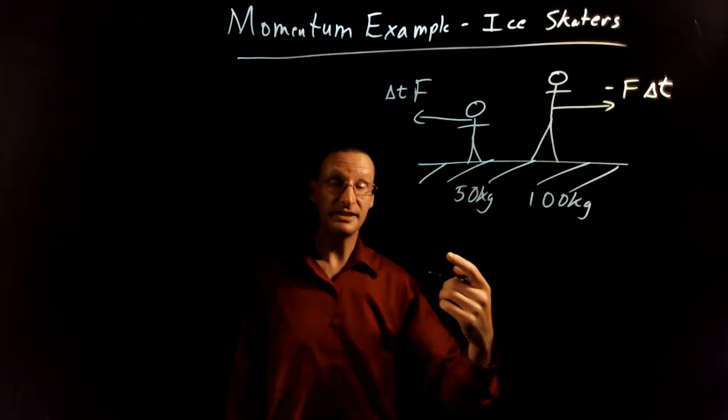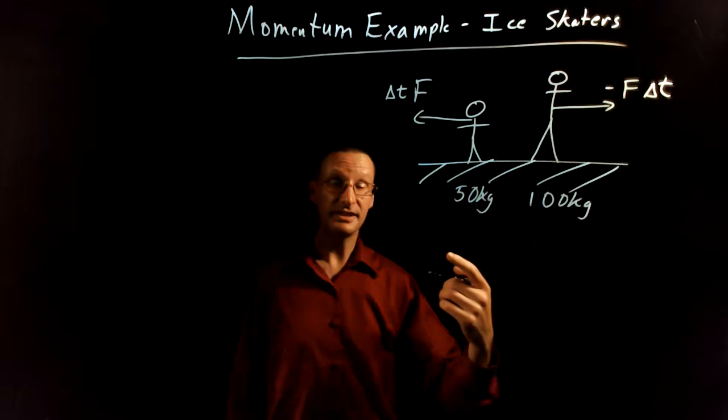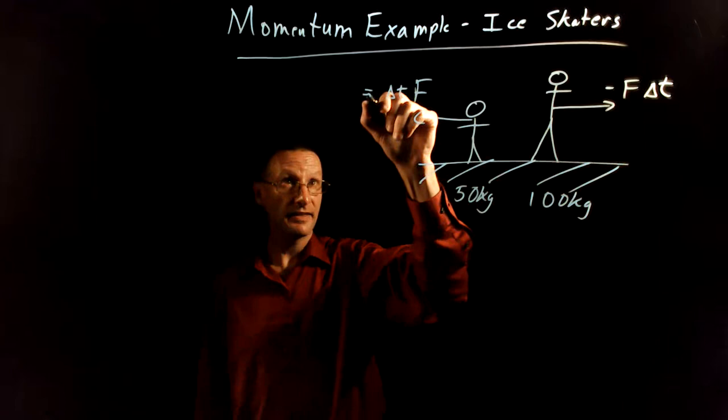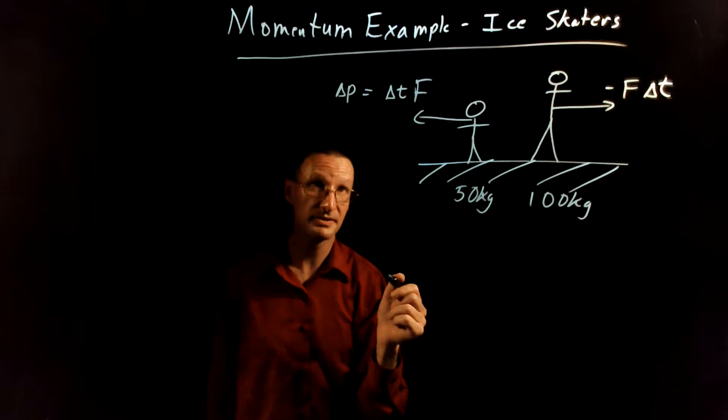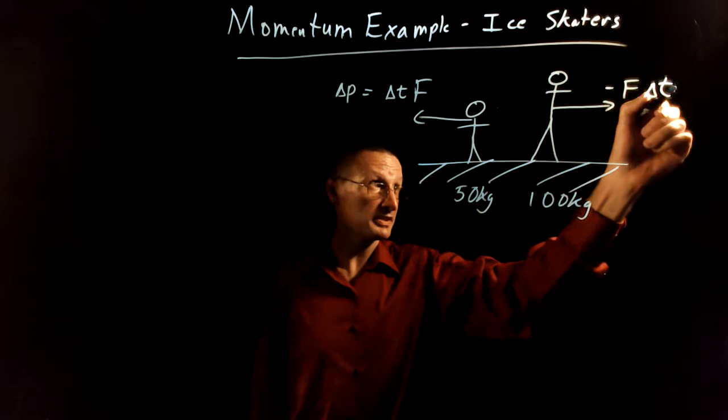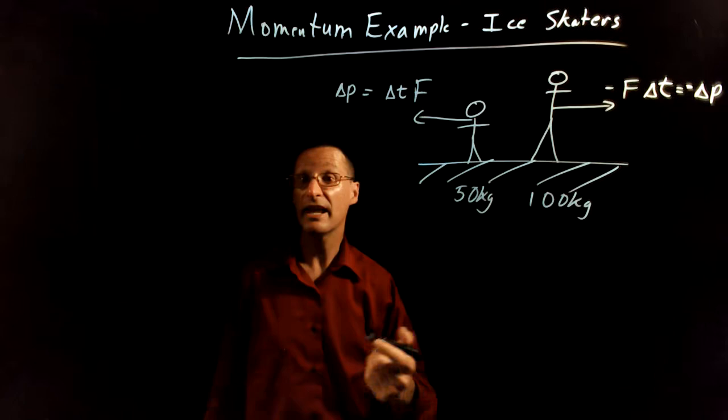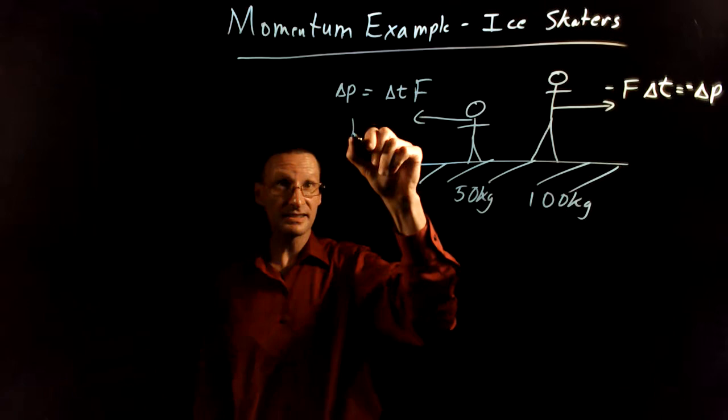Okay so this leads us to the next idea: which one experiences a larger change in momentum? Well according to this equation, if this one has a change in momentum which is equal to the force on that person times the time interval they experience that force, this one must experience the same magnitude of the change in momentum. Of course the direction is opposite, but the magnitudes are going to be the same. So they each exchange the same amount of momentum.